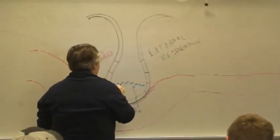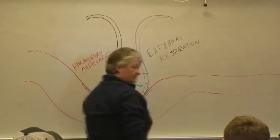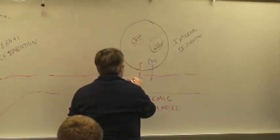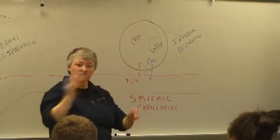So in the lungs, the partial pressure of the oxygen is higher here than in here. In the systemic capillaries, the partial pressure of oxygen is higher here than it is here. And then carbon dioxide is the other way.